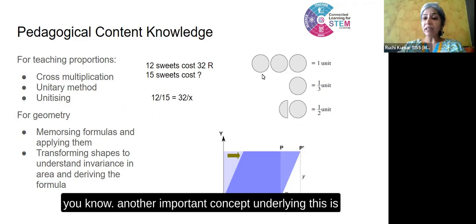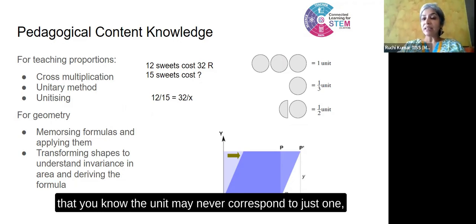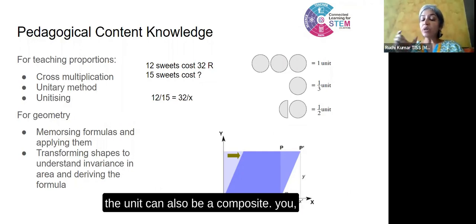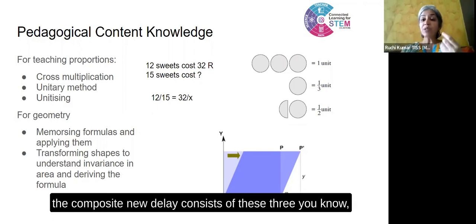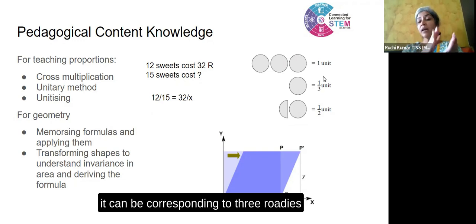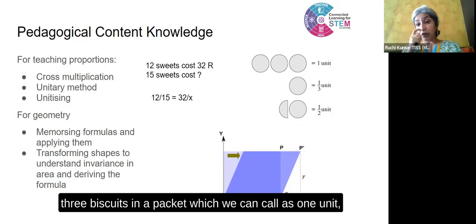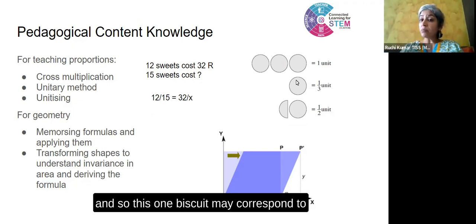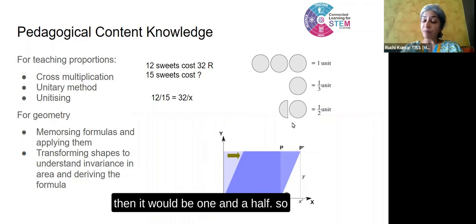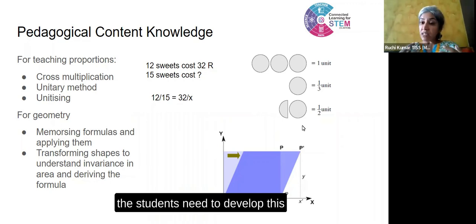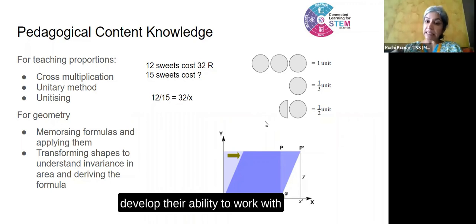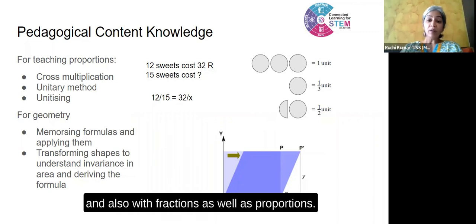Another important concept underlying this is that the unit may never correspond to just one — one melon, one orange, or one rupee. The unit can also be a composite unit. The composite unit may consist of three circles, corresponding to three rotis combined into one unit, or three biscuits in a packet which we can call one unit. So one biscuit may correspond to one-third of the earlier unit, and if we want to consider half a unit, it would be one and a half biscuits. Students need to develop this flexibility of working with different types of unit — not just singular units but also composite units — which develops their facility to work with different kinds of quantities, fractions, and proportions.